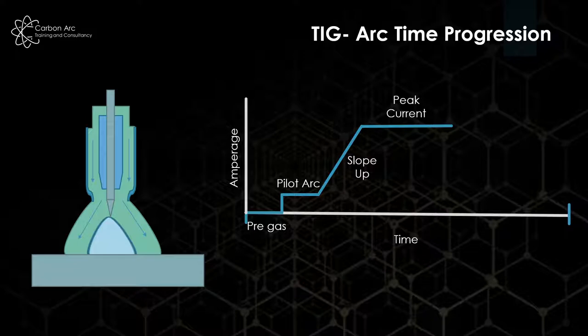Your peak current is the amperage you want to run at according to your welding procedure. When you're finished, if you just turn the arc off straight away we have the risk of crater cracks as the weld pool cools very quickly from the outside in, shrinking and pulling a cavity in the center. We can slope down, which slowly brings the weld pool down to a size where we don't get crater crack.